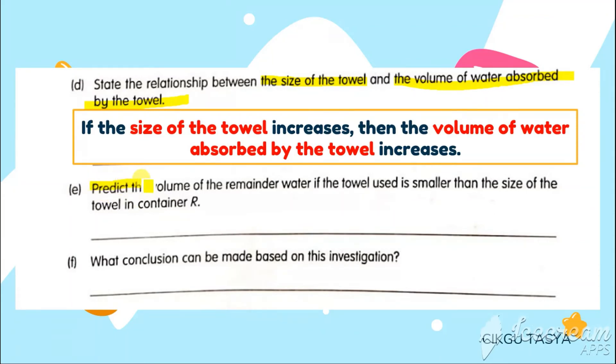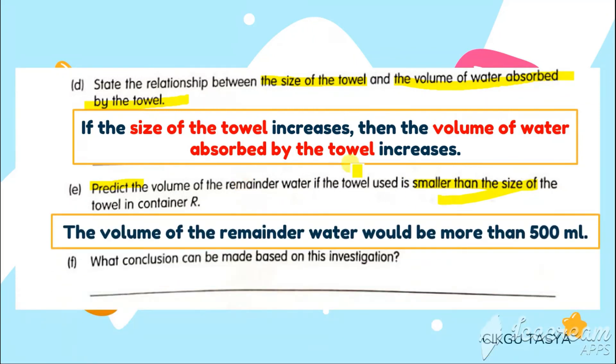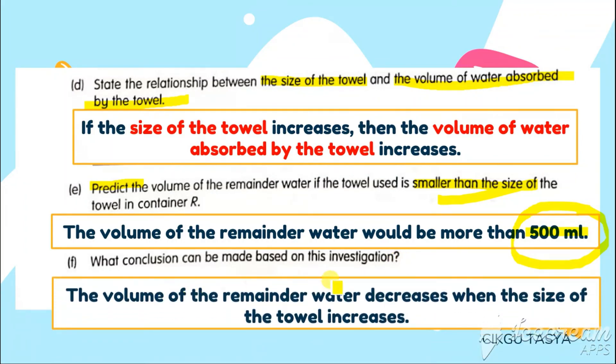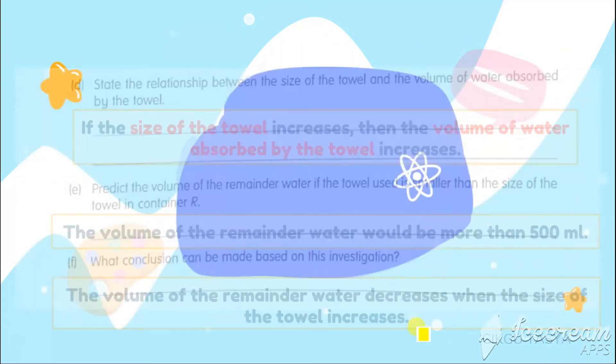Next one. Predict the volume of the remainder water if the towel used is smaller than the size of the container. The volume of the remainder water will be more than 500 ml, because the size of the towel is smaller than the towel and container. It will be more than 500 ml. What is the conclusion based on this investigation? The volume of the water decreases when the size of the towel increases. You can also write as the size of the towel increases, the volume of the remainder water also decreases.